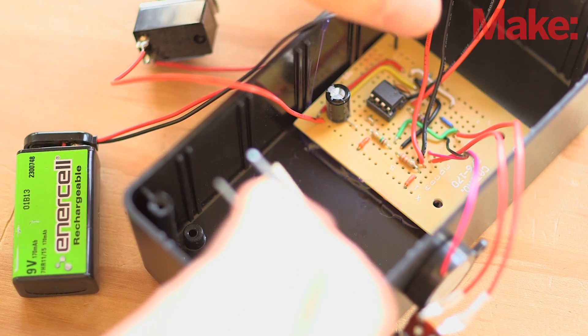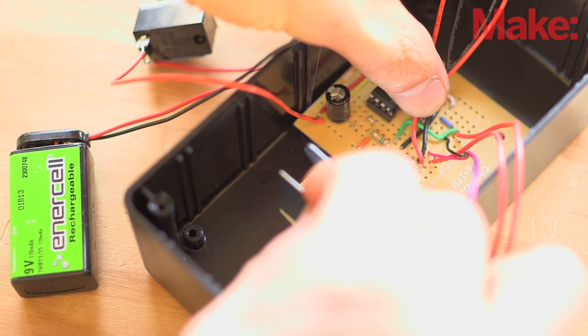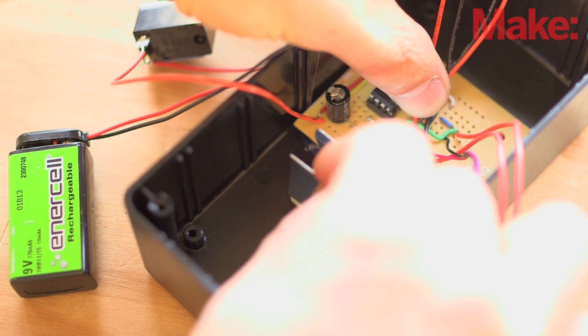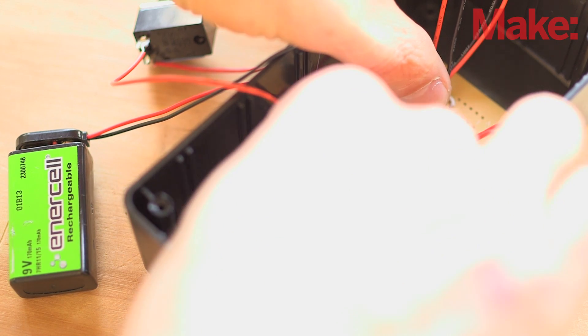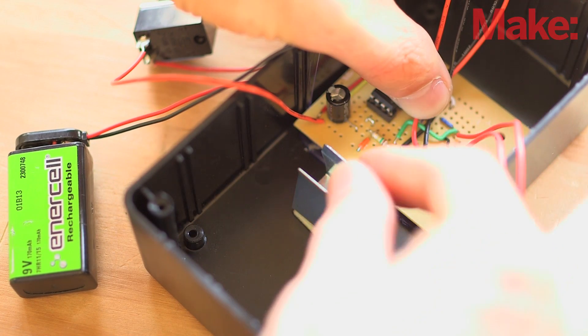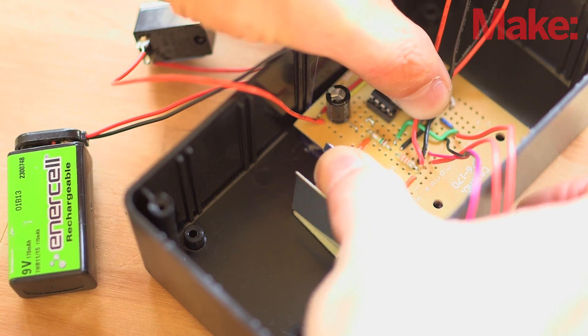You could drill some mounting holes for the perfboard, but a nice dab of hot glue works just fine and it's a lot easier. The battery is held in place with a battery holder. A little square of double-sided foam tape on the holder and you're done.